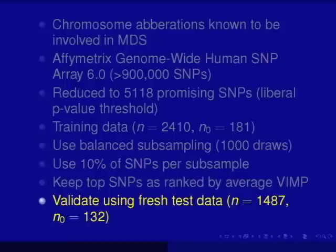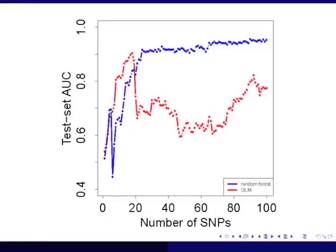Once this was done, we extracted a fresh test data set based on the same platform but from a different institute — actually from a different country — with similar sample sizes in the cases and controls. Here are the results. I'm showing the top 100 SNPs. The blue curve is random forest, the red curve is GLM, which is logistic regression. I fit a forest sequentially: based on the first top SNP, then the first top two SNPs, and so forth up to 100. The X-axis is the number of SNPs; the Y-axis is the test set area under the curve.